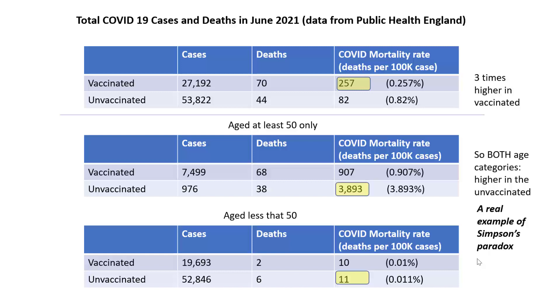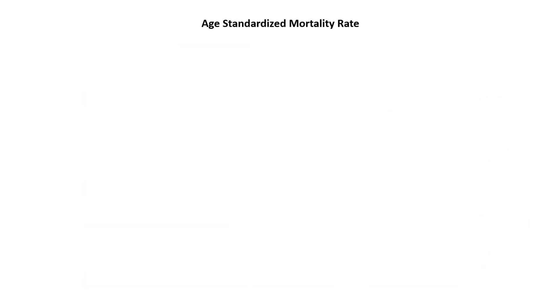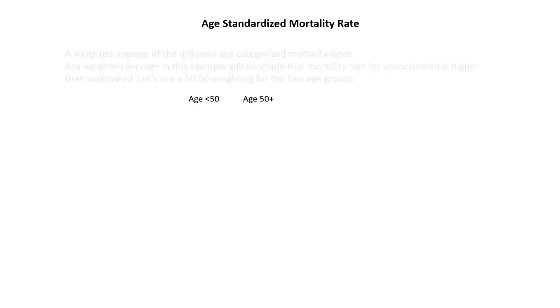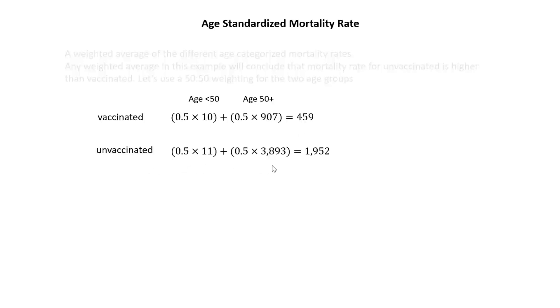If you want a more appropriate aggregated mortality rate, you have to use a weighted average of the different age category mortality rates — that's what the age-standardized mortality rate is. In this example, any weighted average concludes that the mortality rate for the unvaccinated is higher than the vaccinated. Using a 50/50 weighting: for the vaccinated, 0.5 times the mortality rate in the under-50 group plus 0.5 times the rate in the 50-plus group gives 459; for the unvaccinated, the same calculation gives 1,952 — so the weighted average is 4.3 times higher in the unvaccinated.